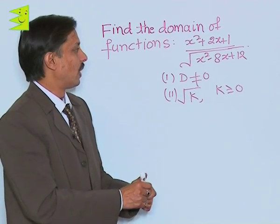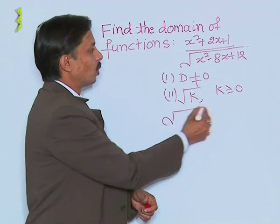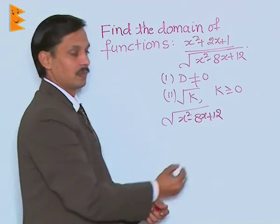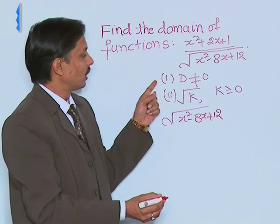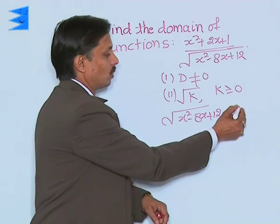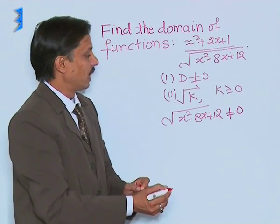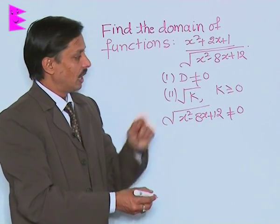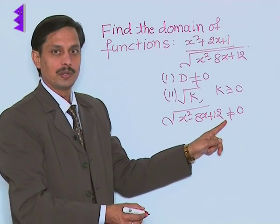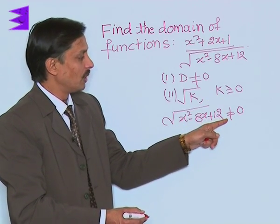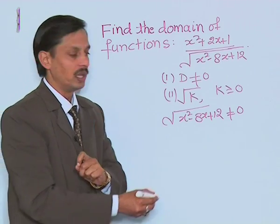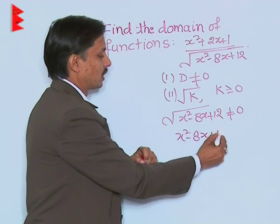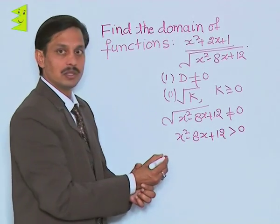Here we are finding, in the denominator, the square root of x² - 8x + 12. The first condition is that this value should not equal 0, and second, the expression inside the square root must be greater than or equal to 0. Since we've already ruled out equal to 0 because it's in the denominator, we conclude that x² - 8x + 12 must be strictly greater than 0.